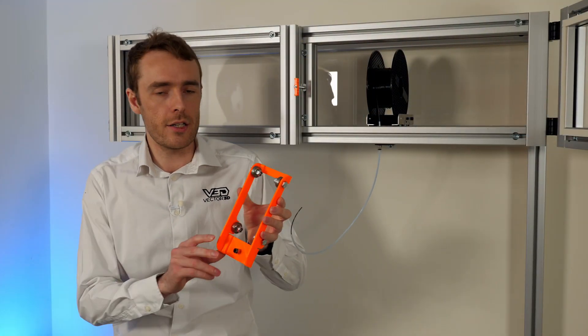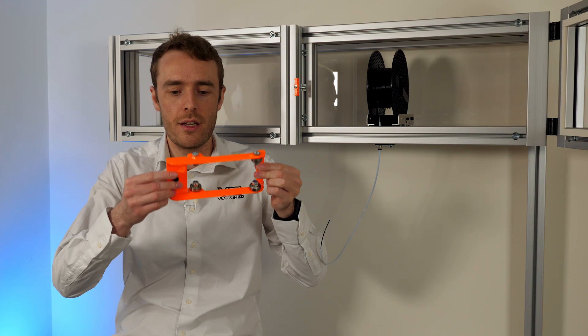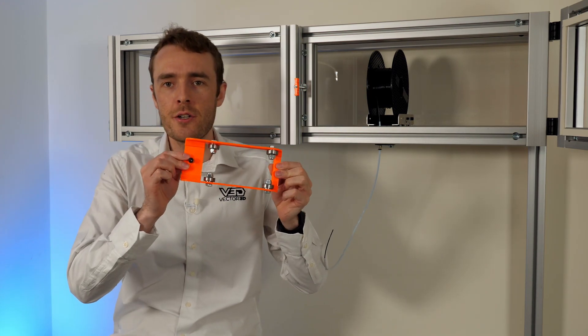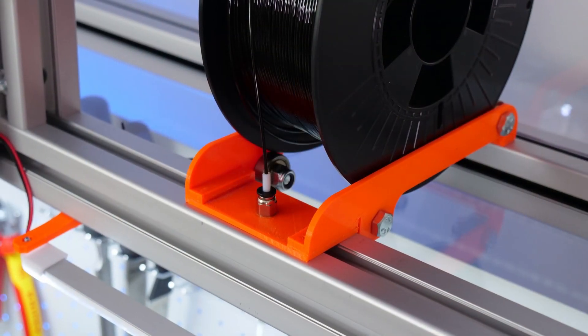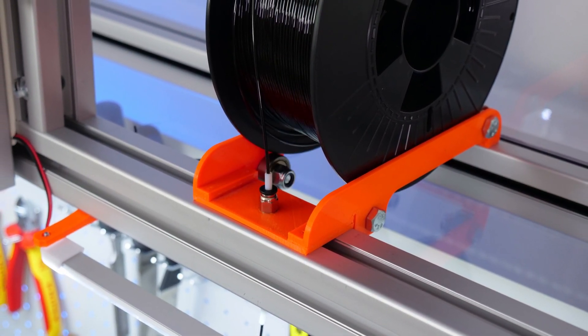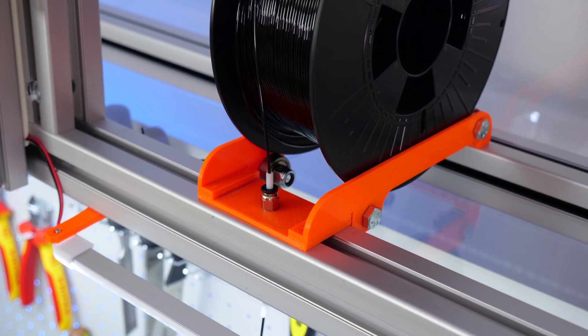So the first spool holder that I actually made looked a little bit like this. Now this is a 3D printed version but the final solution was intended to be a folded aluminum. We've got a number of bearings that would be here in order to obviously hold the filament but a roller would be added across here in order to take the smaller sizes.